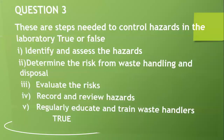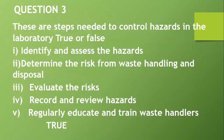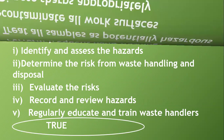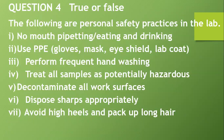Question three: True or false — these are the steps needed to control hazards in the laboratory: identify and assess hazards (true), determine the risk from waste handling and disposal (true), evaluate the risk (true), record and review hazards (true), and regularly educate and train waste handlers (true).